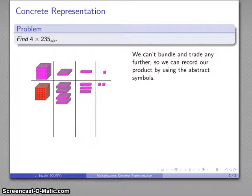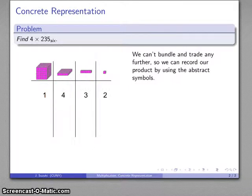I can record the product using our abstract symbols. What do I have here? I have 1 of these, 4 of these, 3 of these, and 2 of these. So my product: 1432 base 6.